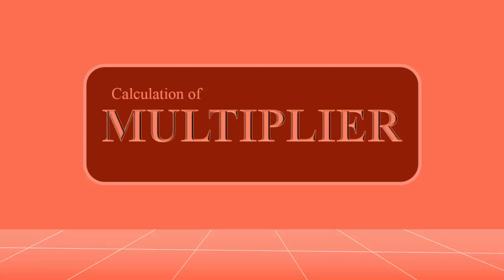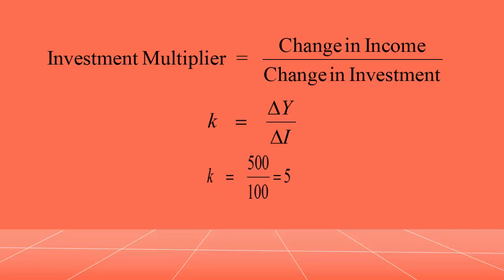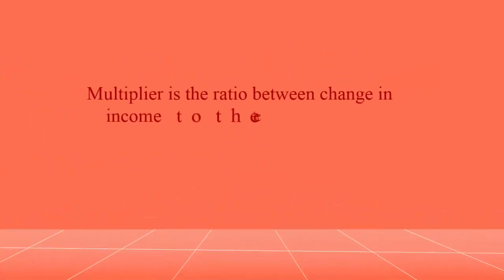Now I shall show you how to calculate the value of the Multiplier. The Investment Multiplier is equal to change in income divided by change in investment. Algebraically, K, which stands for investment multiplier, is equal to delta Y by delta I. The change in investment is Rs. 100 crores and the resultant change in income is Rs. 500 crores, so the multiplier is 5. It can be interpreted as that every 1 rupee of additional investment will create an additional income of Rs. 5. Hence, the multiplier can be defined as the ratio between change in income to change in investment.